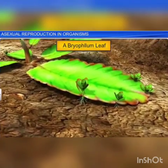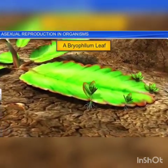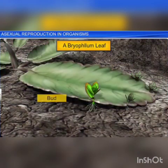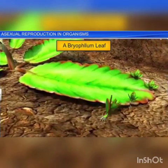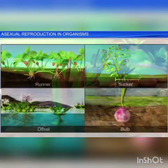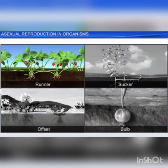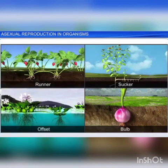Bryophyllum, on the other hand, have notches on the margin of their leaves that give rise to adventitious buds that fall off and later germinate into new plantlets. Apart from buds and nodes, runners, suckers, offsets, and bulbs are other examples of vegetative propagules in plants.